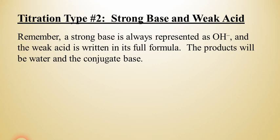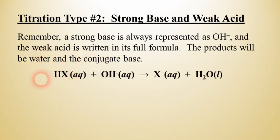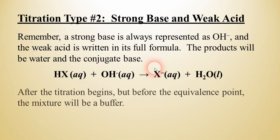Whenever you write the equation for these reactions, the strong base is always going to be represented as hydroxide, and the weak acid will be whatever its formula is. The products will be water and the conjugate base of the acid. This is just the generic formula for that, where X is the anion that's attached to the hydrogen ion in the reaction of the titration.